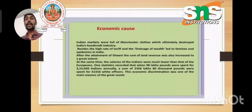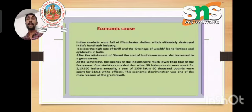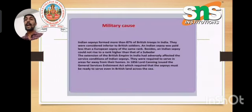The economic causes of the 1857 revolt were that the British government had imposed various land revenue settlements: the Permanent Settlement in Bengal, the Mahalwari Settlement in central India, and the Ryotwari Settlement in southern India.